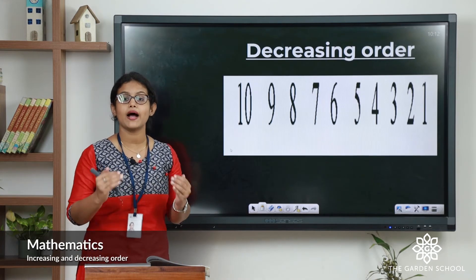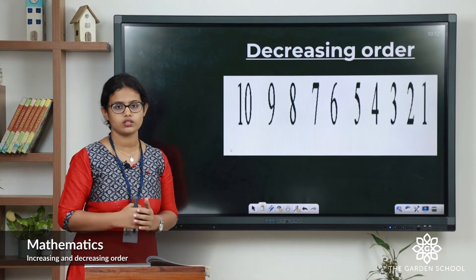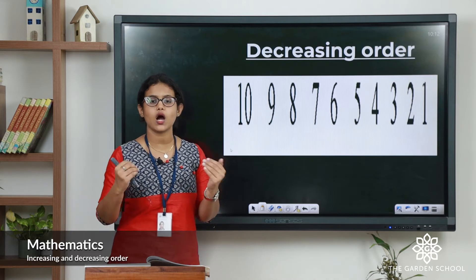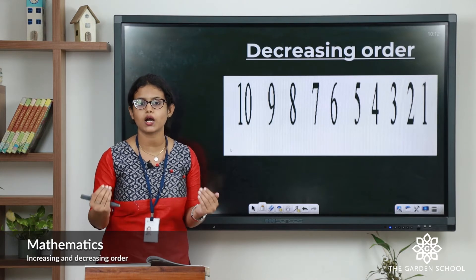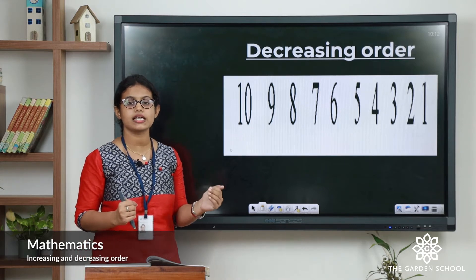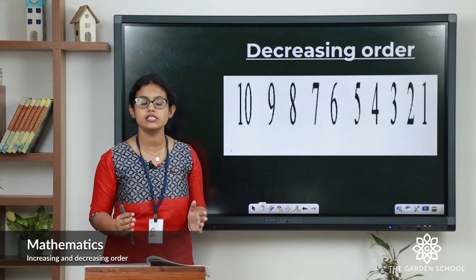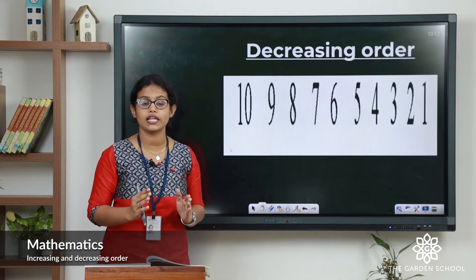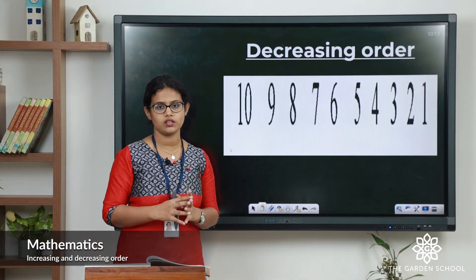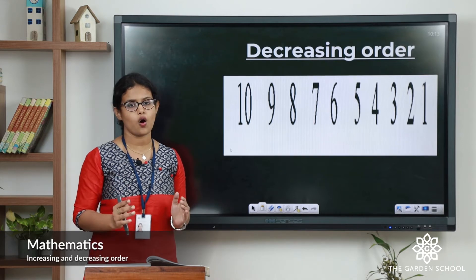When we do backward counting, we always do it in decreasing order. Here you can see numbers from ten. When we count backward: ten, nine, eight, seven, six, five, four — it goes on till one. It is in decreasing order. It starts with the larger number ten and ends with the smaller number one. That is decreasing order or descending order.